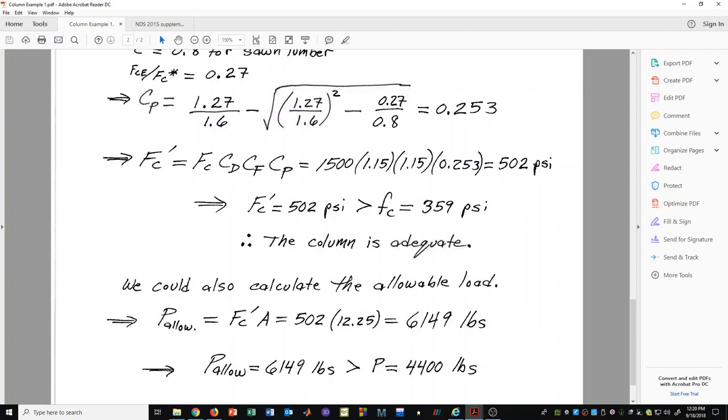The allowable load is greater than the applied load. Since we already saw that the column is adequate, we should be seeing this be adequate also. The allowable load is greater than the total applied load for the load combination that we were considering in this problem.